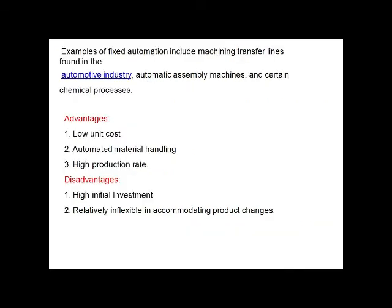The high initial investment cost can be spread over a very large number of units, making the unit cost attractive compared to alternative methods of production. Examples of fixed automation include the automotive industry, automatic assembly machines, and certain chemical processes. Advantages: low unit cost, automated material handling, high production rate. Disadvantages: high initial investment, relatively inflexible in accommodating product changes.